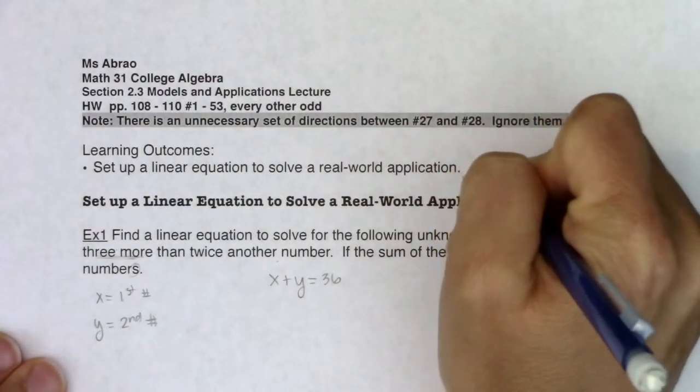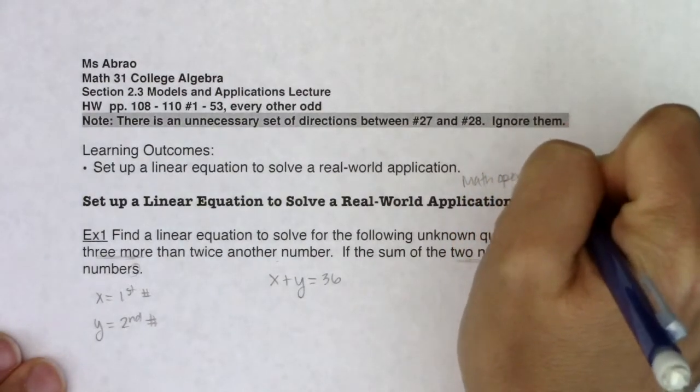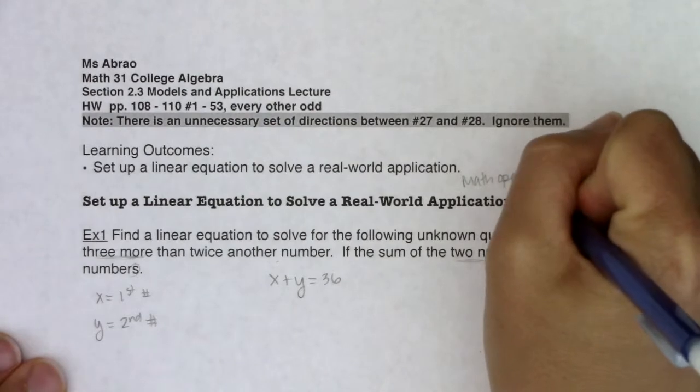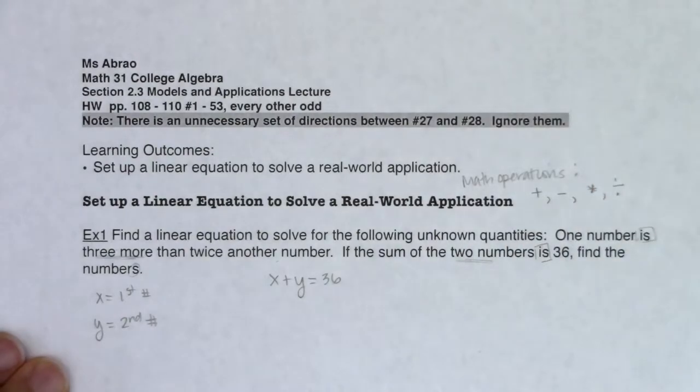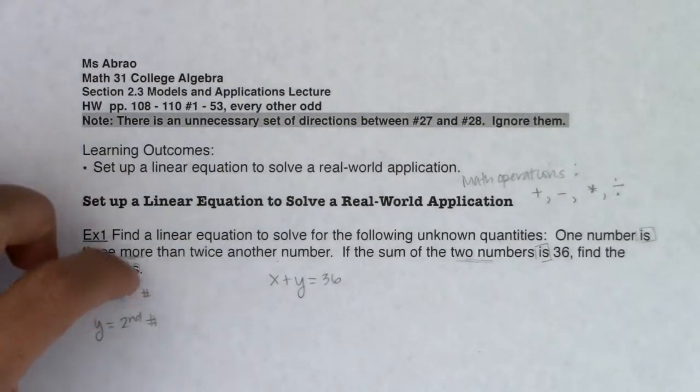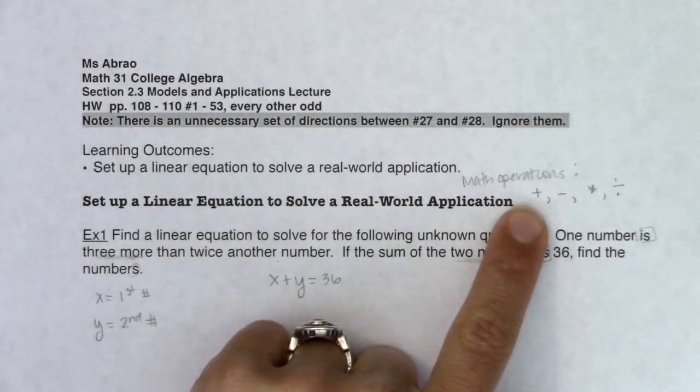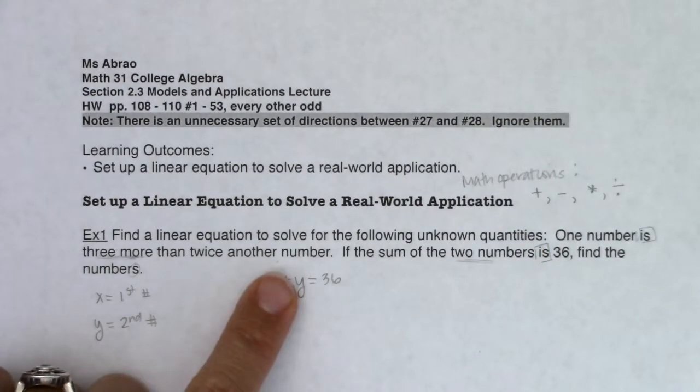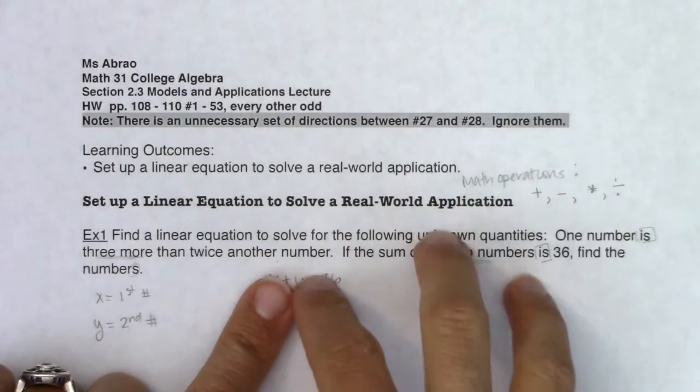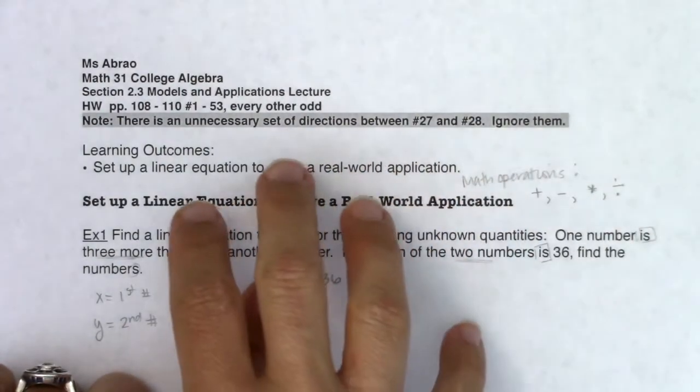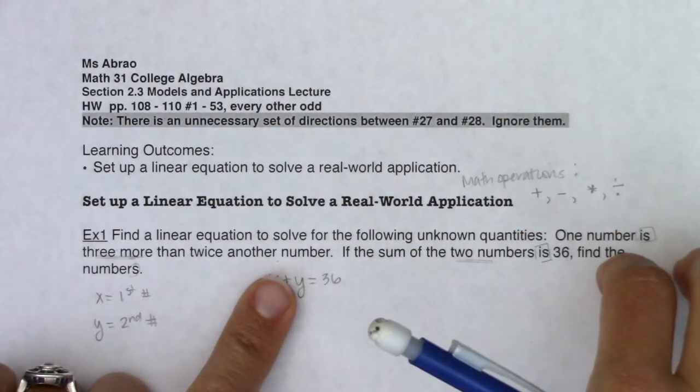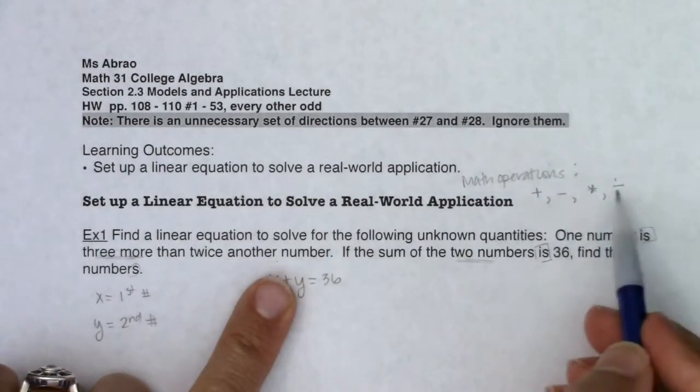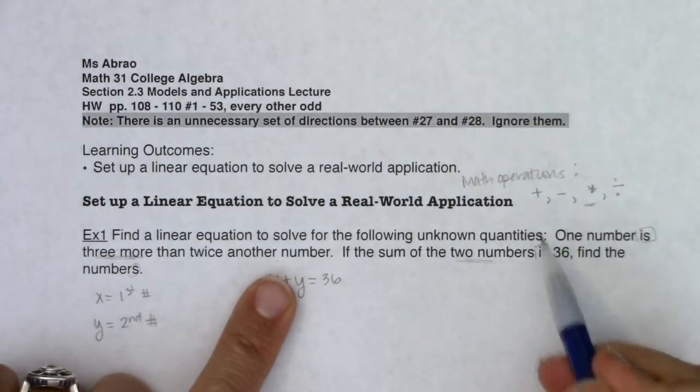When you hear 'three more,' 'more' goes with the math operation of addition. If you hear me talk about math operations, there are four linear operations we have in math: addition, subtraction, multiplication, and division. When I hear the phrase 'three more,' that's asking me to use the operation of addition. When I hear 'twice another number,' again you're doubling a number. If a number was four, twice that number is eight. If a number was ten, twice that number is twenty. When you do twice another number, you're getting asked to use the math operation of multiplication.